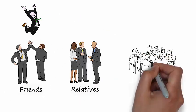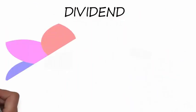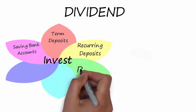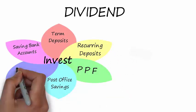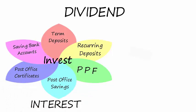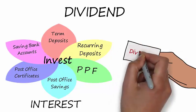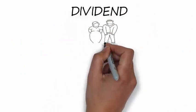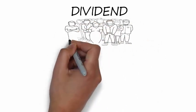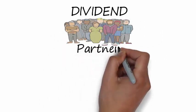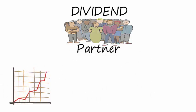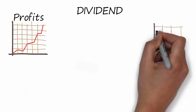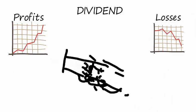When you are investing money in saving bank accounts, term deposits, recurring deposits, public provident fund, and post office savings schemes or certificates, you will receive interest. But if you invest in shares of a company, your returns will be paid as dividend. Buying shares of a particular company means you have invested your money in the business of that company and you are a partner of the company. Being a partner, you will be sharing the profits and losses of the company.